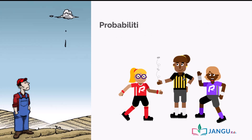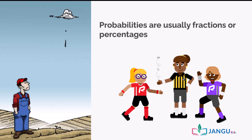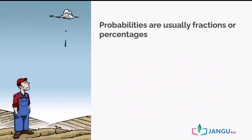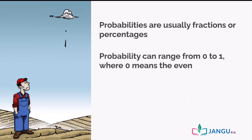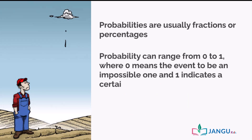Probabilities are usually fractions or percentages. We can only predict the chance of an event to occur — that is, how likely they are to happen. Probability can range from 0 to 1, where 0 means the event is an impossible one, and 1 indicates a certain event.